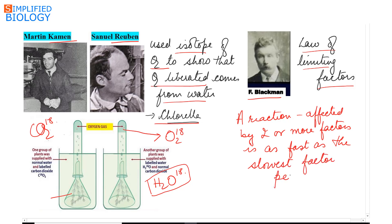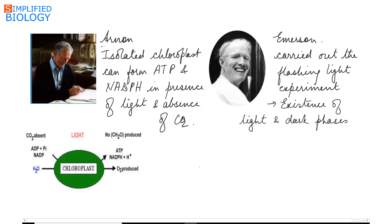Arnon isolated chloroplast and he showed that isolated chloroplast was capable of forming ATP and NADPH in the presence of light and in the absence of carbon dioxide. An isolated chloroplast can form ATP and NADPH in the presence of light and absence of carbon dioxide. He discovered photophosphorylation.